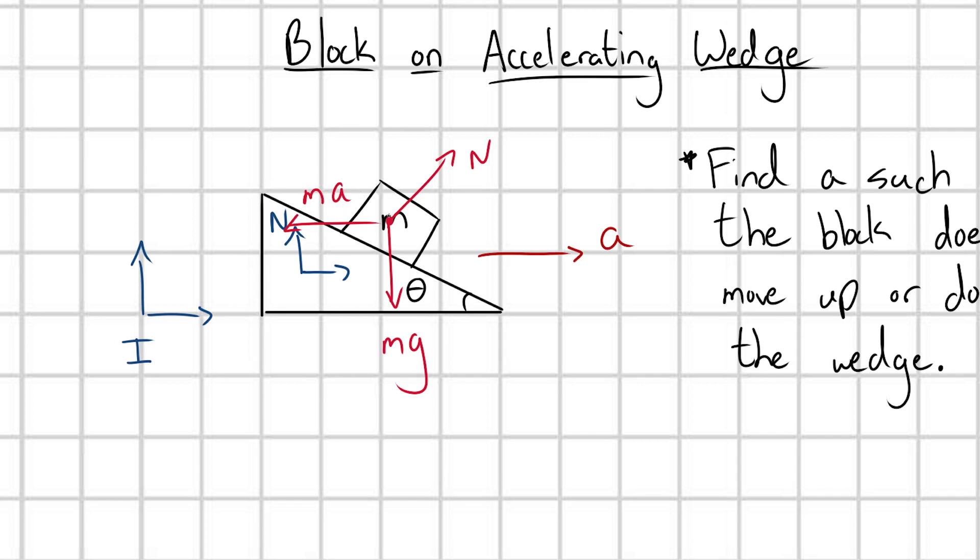So N is going to break down into two components, one's going to be vertical and one's going to be horizontal. And for the block to remain stationary in the N frame, I can tell that this horizontal component here is going to have to cancel out with M A, and this vertical component here is going to have to cancel out with M G.